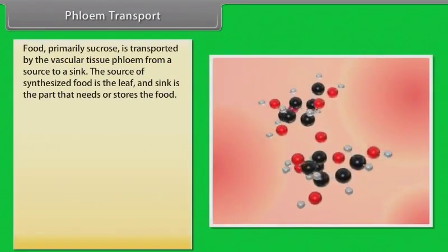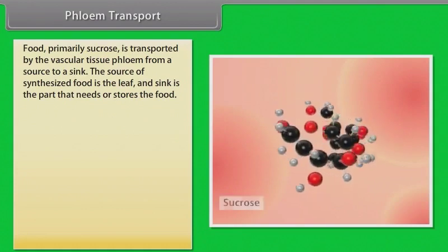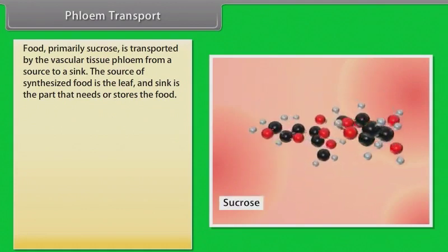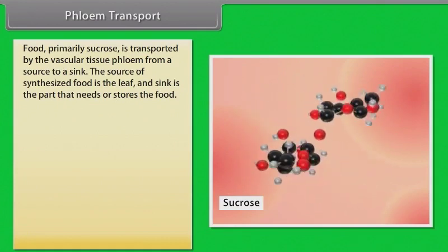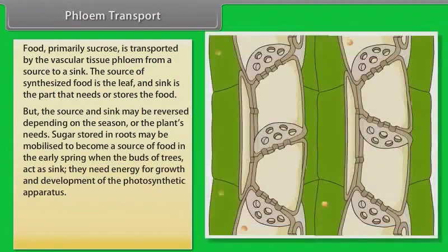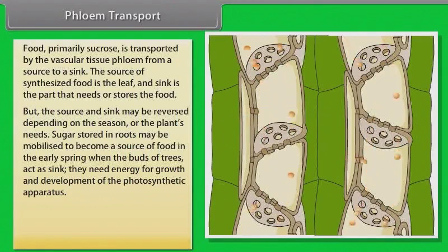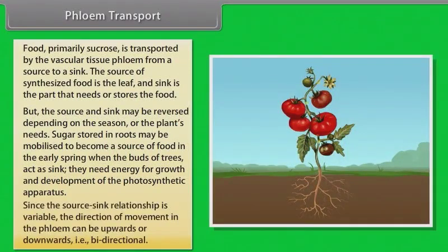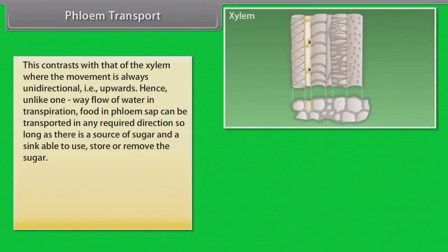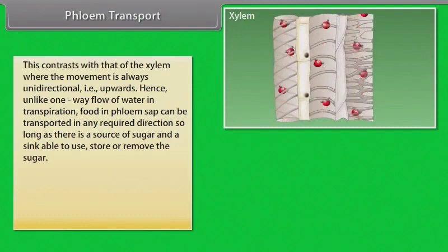Now we will learn about phloem transport. Food, primarily sucrose, is transported by the vascular tissue phloem from a source to a sink. Usually the source is that part of the plant which synthesizes the food. The source and sink may be reversed depending on the season or the plant's needs. Sugar stored in roots may be mobilized to become a source of food in early spring, when the buds of trees act as sinks and need energy for growth and development of the photosynthetic apparatus. Since the source-sink relationship is variable, the direction of movement in the phloem can be upwards or downwards, which means bidirectional. This contrasts with the xylem, where movement is always unidirectional, which means upwards.